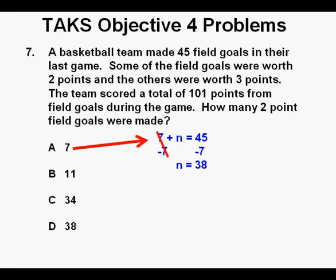And that's our number of 3-point field goals. Next we find the total points by taking 7 times 2 plus 38 times 3. And that's 14 plus 114 equals 128 points. And since that's way too many points, we only need 101 points, we cross off answer A.